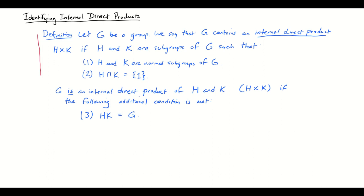You may be wondering about the terminology. We've defined external direct product and we've defined internal direct product. In terms of group structure, external and internal direct products are the same. What is different is how we arrive at them. An external direct product is obtained by taking any two groups that we want — we could say Z7 and S3, an abelian group and a non-abelian group, or two non-abelian, or two abelian — and we take the direct product by forming ordered pairs and defining a group operation on ordered pairs.